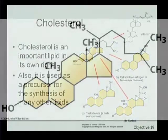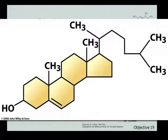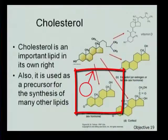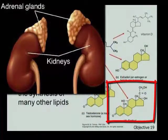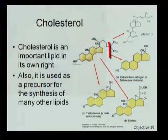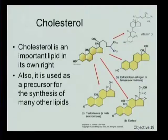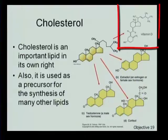Another example of a lipid molecule is cholesterol. Cholesterol is important by itself, but it's also important for the synthesis of many other lipids. When we look at hormones in Module 14, we'll see that many hormones are made from the cholesterol molecule. We see three examples here: testosterone, which is one of the male sex hormones; cortisol, which is made by the adrenal cortex — the glands on top of the kidneys; and estradiol, which is an important female hormone. Cholesterol is also used to make fat-soluble vitamins such as vitamin D.